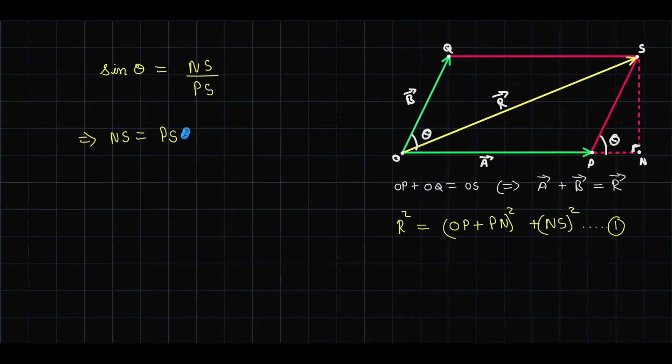And now cos theta of this triangle would be cos theta equals to the adjacent side over the hypotenuse which is PN over PS. So the value of PN would be PS cos theta.